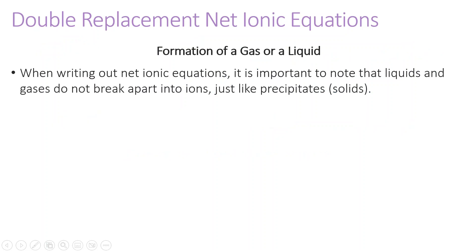When writing net ionic equations, it is important to note that liquids and gases do not break apart into ions, just like precipitates and solids. The requirement for a double replacement reaction to occur is something not being aqueous in the products. If everything is aqueous before and after, nothing happens. So if we end with a solid, a gas, or a liquid, those will all produce reactions. We just need a product that is not aqueous.